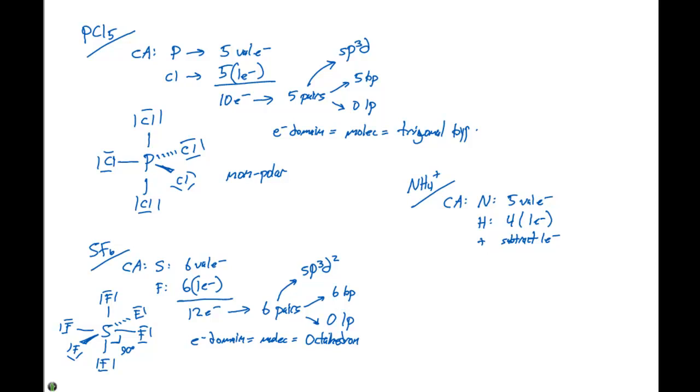Because there's a total of nine electrons here, we subtract one. We get eight total electrons and four pairs. Four of them are going to be bonding pairs. Zero are going to be lone pairs.